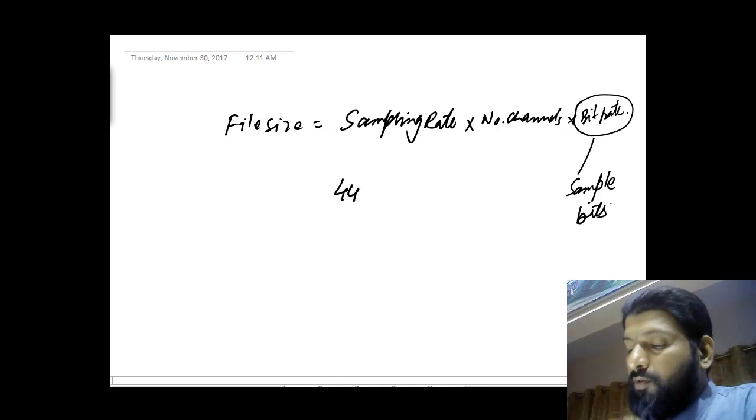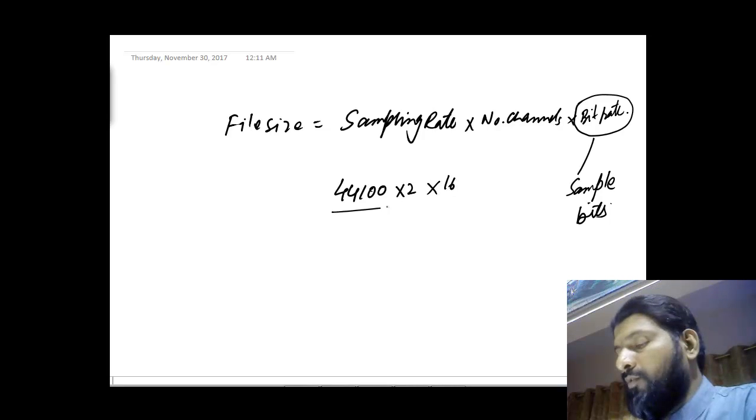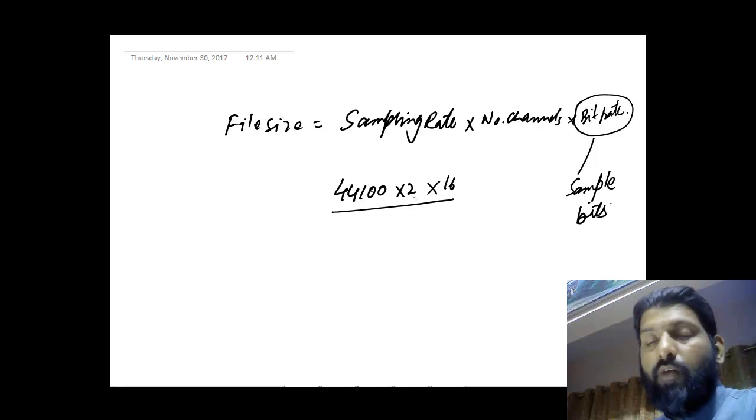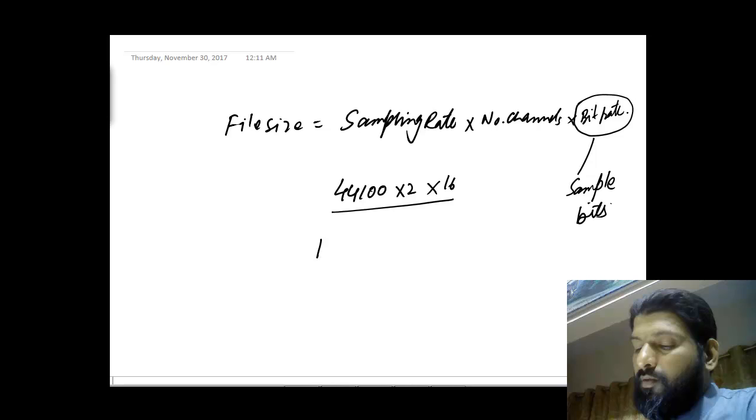We are going to calculate this way: 44,100 multiply by 2 multiply by 16. This will give you the value. Even though this is a very big value which is not very easy to calculate for those who are not good at maths, keeping in view, this will give you